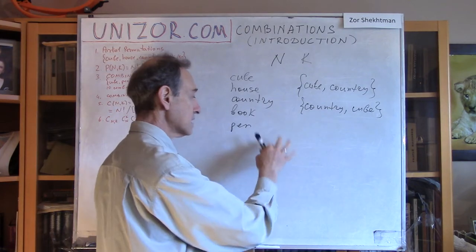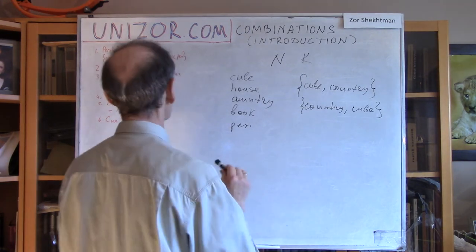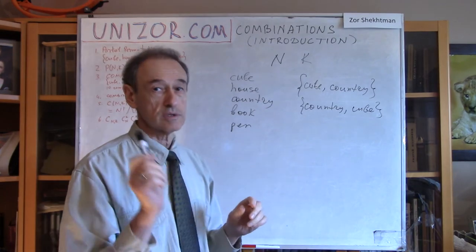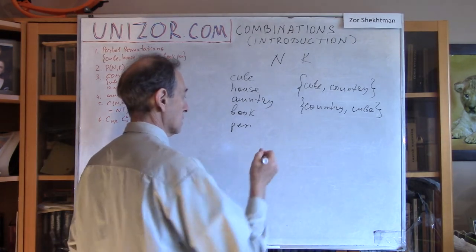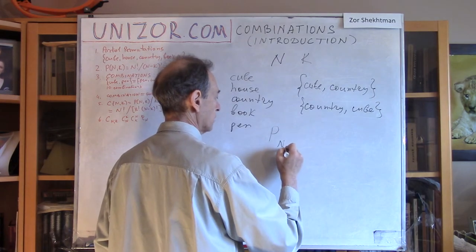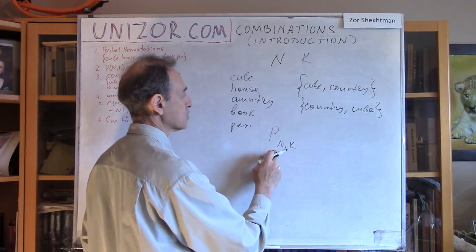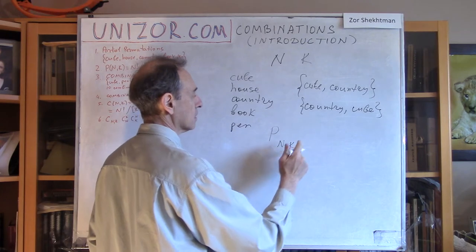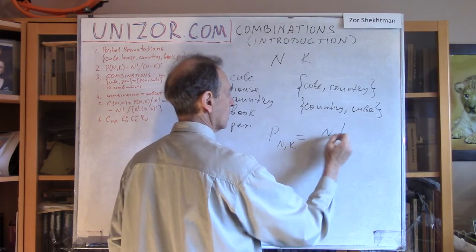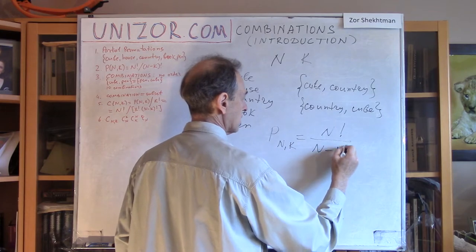Now, this is the case of partial permutations. We do remember the formula for this: the partial permutations of n objects picking k equals n factorial divided by n minus k factorial. You can refresh this by going into the previous lecture where I explain this formula.